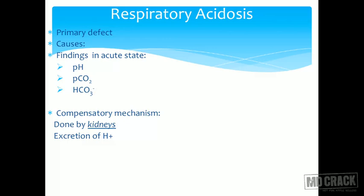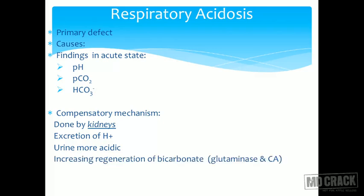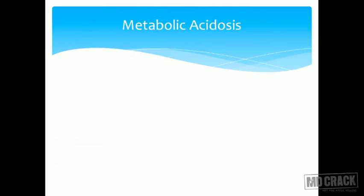The kidney excretes protons in the form of ammonium chloride or sodium dihydrogen phosphate, so the urine becomes more acidic in respiratory acidosis. There is increasing regeneration of bicarbonate by glutaminase and carbonic anhydrase.